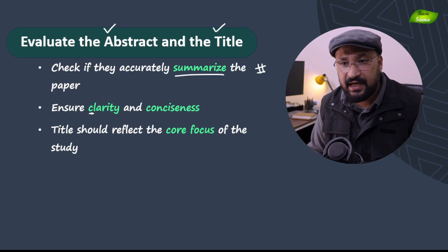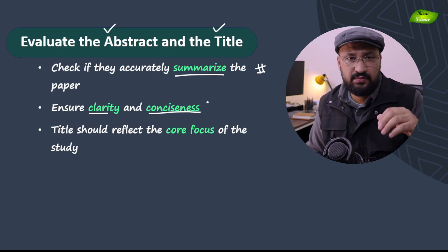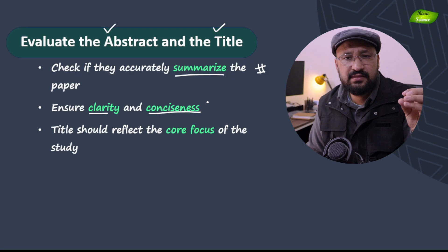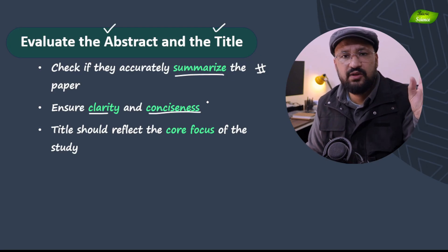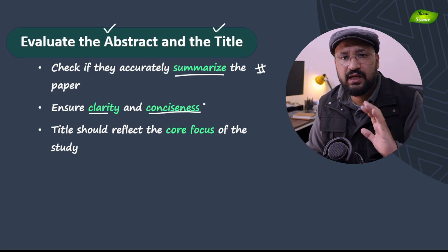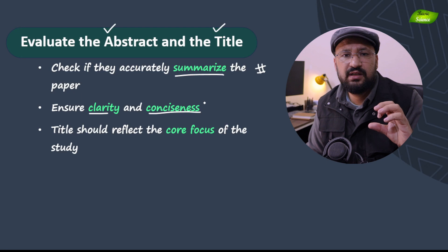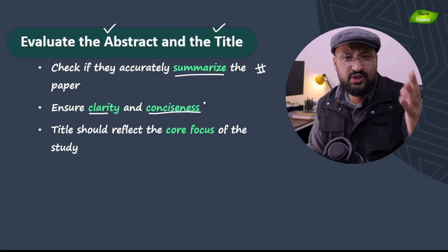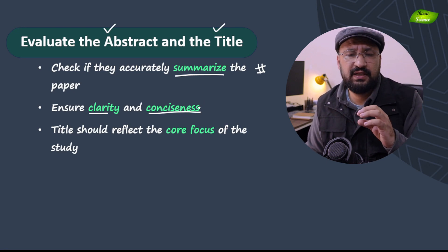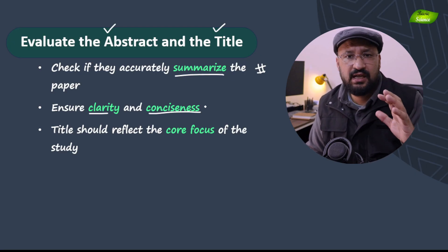Next is clarity and conciseness. The abstract should not have a lot of introduction but very little results. In a manuscript you have the title, abstract, introduction, materials and methods, results, discussion, and sometimes a conclusion and future aspects. All those things should be represented in the abstract in a proportional way. You should not have too much introduction and then very little of the methods and results — everything should be properly arranged. That is the structure of the abstract.